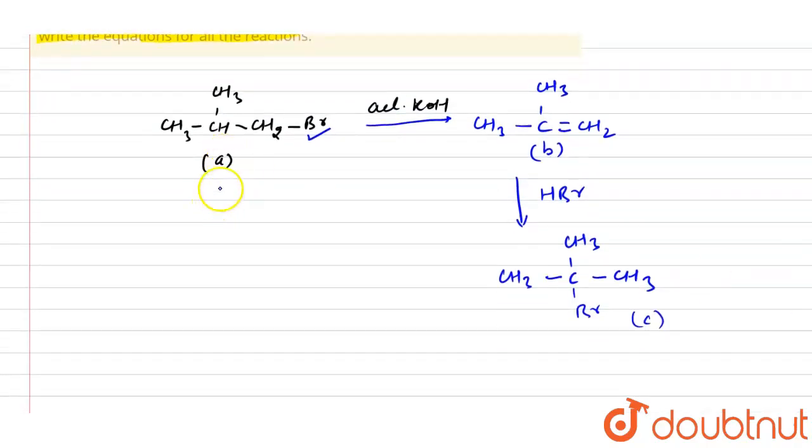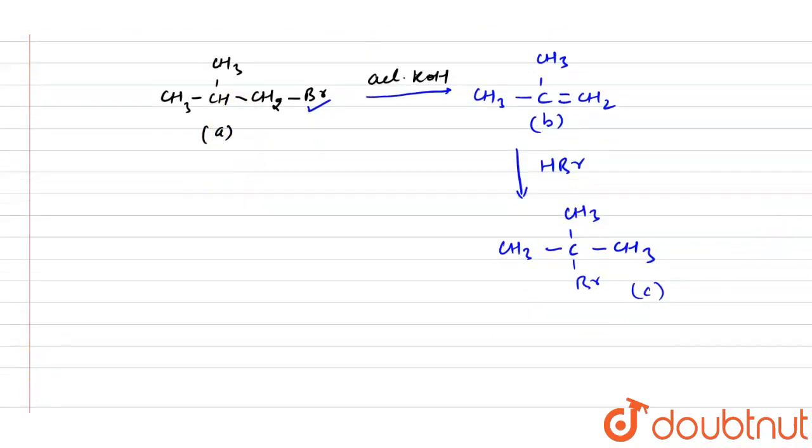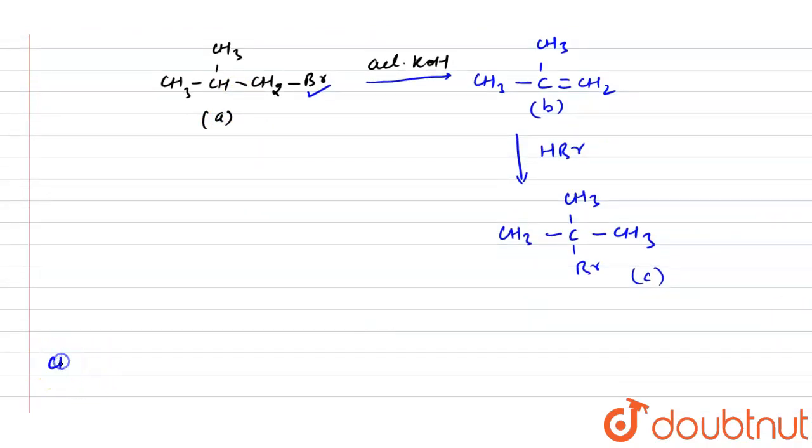Now A is reacting with the sodium metal which gives a compound and that is C8H18. So this compound will be reacted, this A. So this can be written as in that way, like CH3CH2CHBrCH3, and that will be reacting with sodium. Two moles of sodium we have to take.